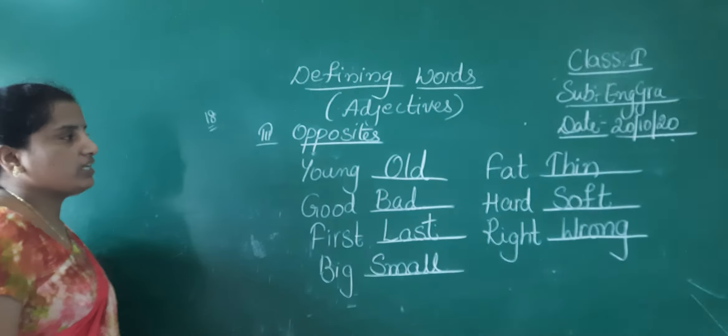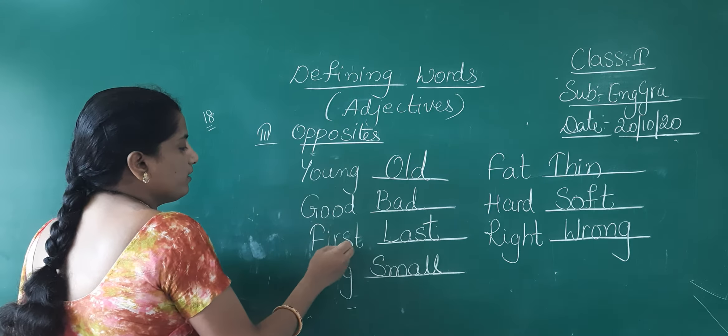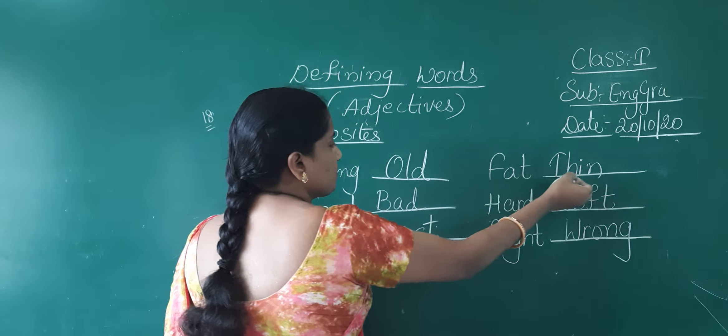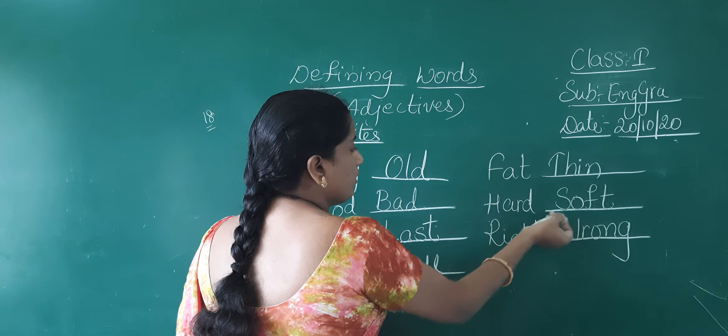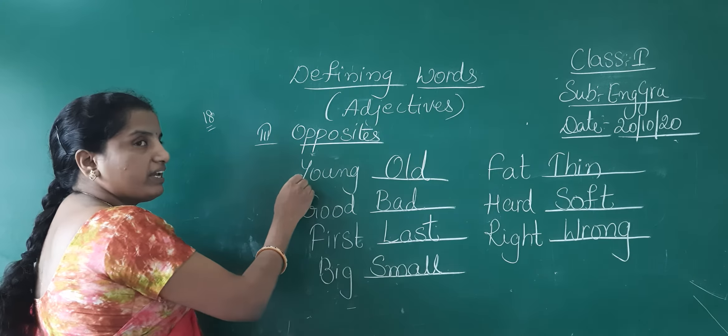See children, young, old. Good, bad. First, last. Big, small. Fat opposite, thin. Hard, soft. Right, wrong.